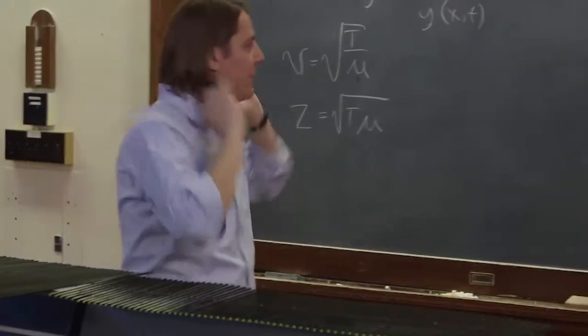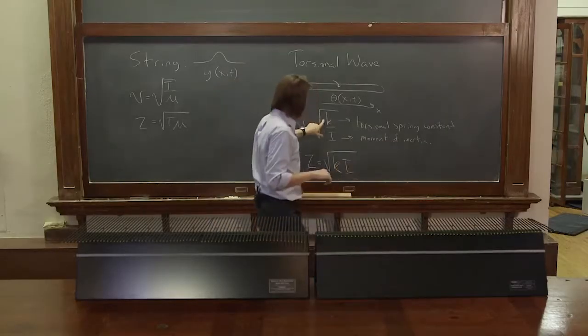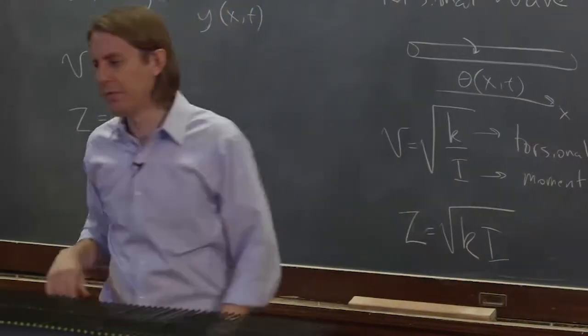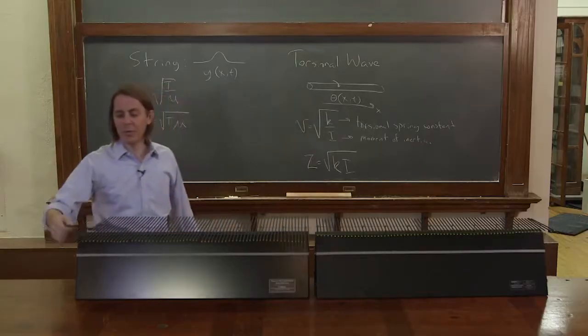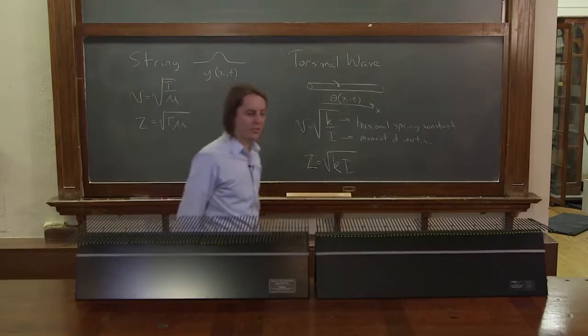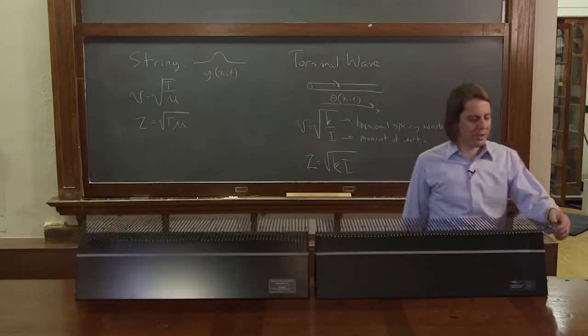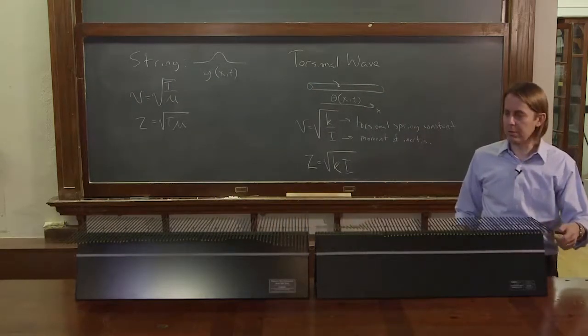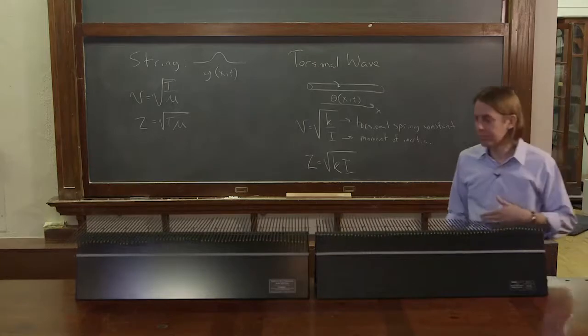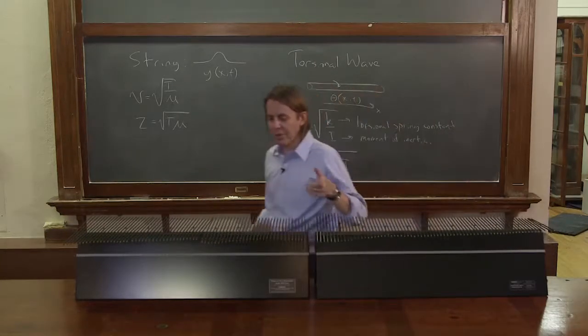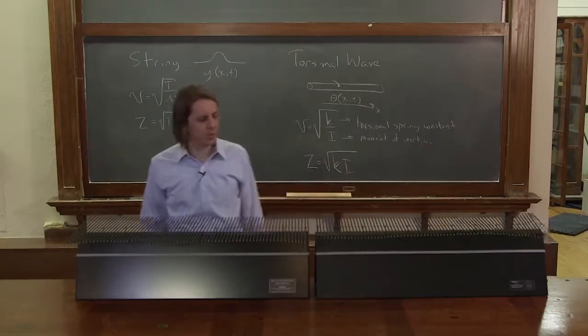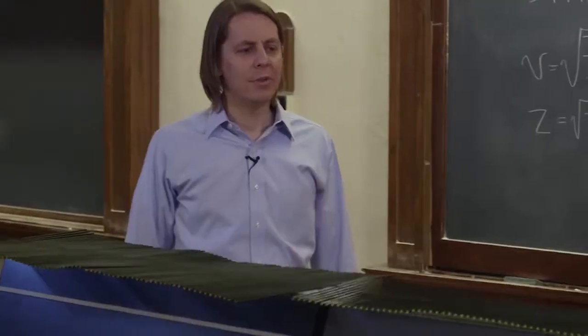We could also think about the velocity. They have the same k, but the one with the smaller I should have a faster wave speed. So there you see the pulse goes nice gentle speed there, and here, oh, much faster. So matches. Small moment, big moment, high speed, low speed. So everything makes sense.